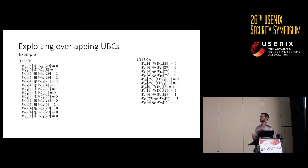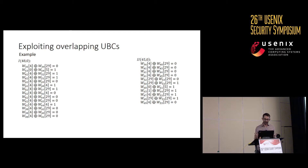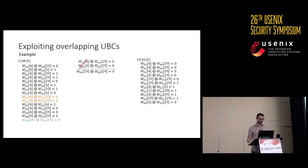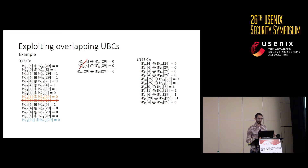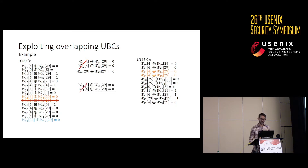We'd like to exploit those overlapping equations to further lower the number of equations to check. Looking at two disturbance vectors and their associated UBCs, there are no shared parity equations between them. However, if we take two equations and add them together — doing some linear algebra — the first term cancels out and we get a new equation. We add that back into the UBC, which is an equivalent set, and we can remove one of the previous equations. Repeating this process, we end up with equivalent UBCs that now share an equation between them.